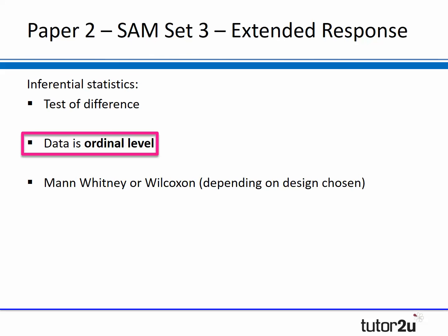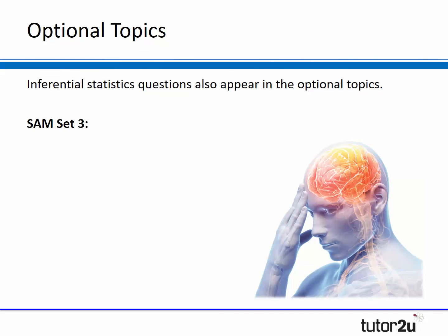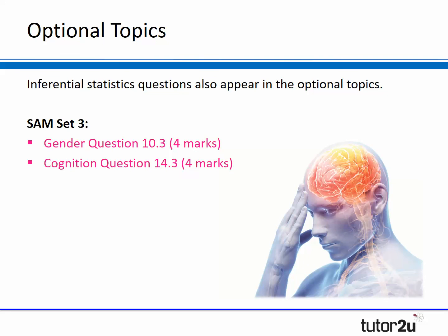Hopefully what I've highlighted by going through those sample assessment materials is just how important levels of measurement appear in the new sample assessment materials within the research method section. To make matters worse, these questions can also appear in the optional topics. If we look at the sample assessment materials for paper 3, there are three questions in the block that has gender, cognition, and relationships that again require students to understand levels of measurement. So not only can this type of question appear in paper 2, there's nothing to stop it appearing in all of the optional topics, as well as potentially the year 1 topics - memory, social, attachment, and so forth.